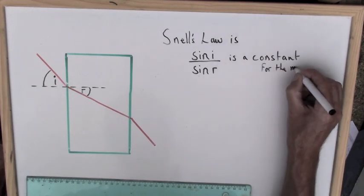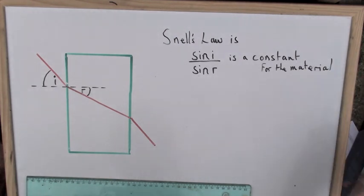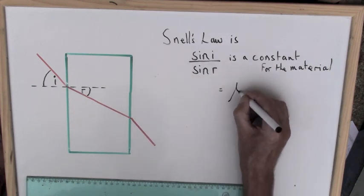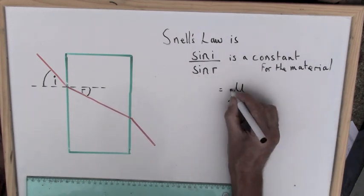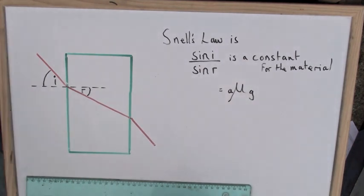This constant is called the refractive index and is usually written with the Greek symbol μ. In this case with a subscript a and a subscript g to show that it is the refractive index from air to glass.